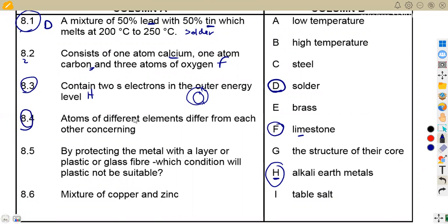8.4, atoms of different elements differ from each other. Concerning. So which atoms of different elements differ from each other? From the answers here, we can see that the structure of their, what this statement is supposed to be supposed to be a continuation. Atoms of different elements differ from each other? Concerning. The structure of their core. Yes. So that's our G. So this was just a continuation.